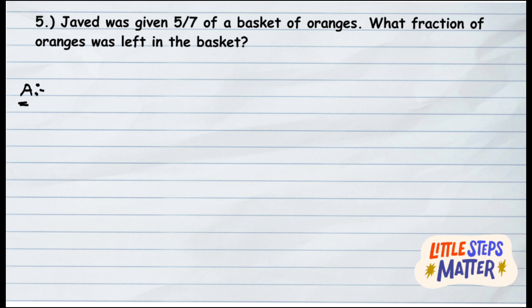So what is given? Javid was given 5 upon 7 of a basket of oranges. That means there was one basket in which there were few oranges, we don't know. And from that basket, Javid was given how much? 5 upon 7.